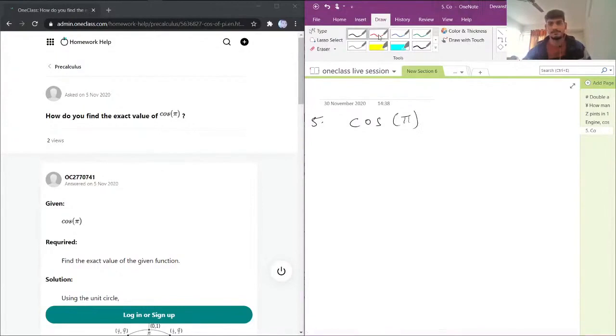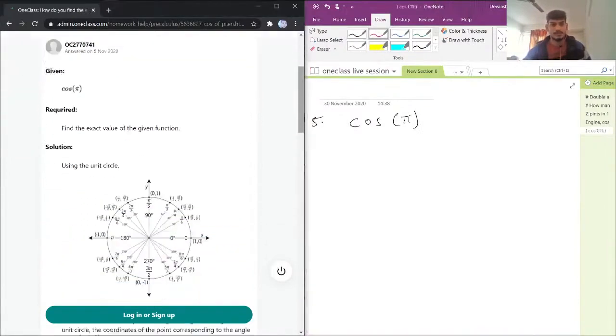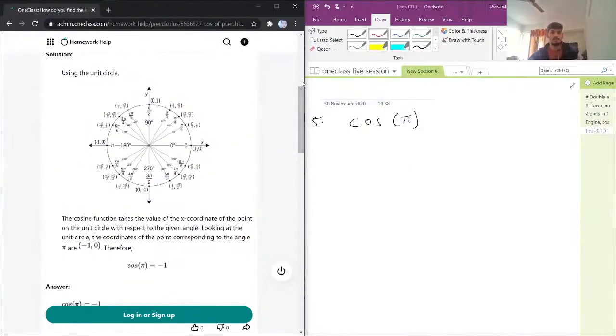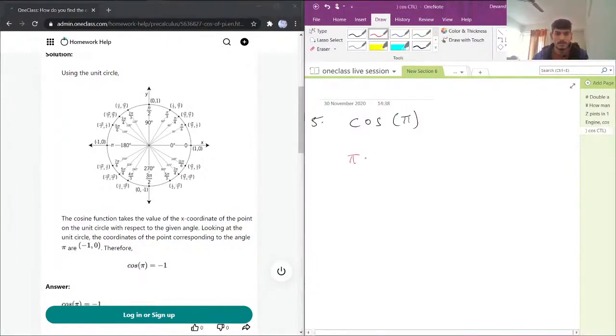In this case, we are going to take the help from the unit circle. So cosine of pi - the coordinates for pi on the unit circle is negative one, comma zero. And cosine will be equal to x over